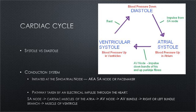Blood pressure in the systemic arteries is greatest during ventricular systole. There is a period of relaxation in which the heart fills with blood, known as diastole. The period of greatest atrial pressure is during systole. Our blood pressure is always listed with two numbers: systolic versus diastolic.